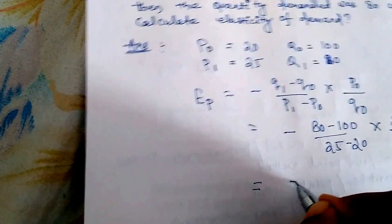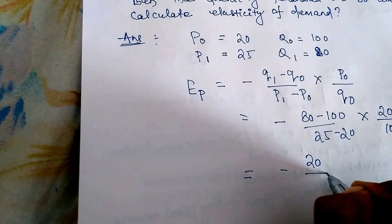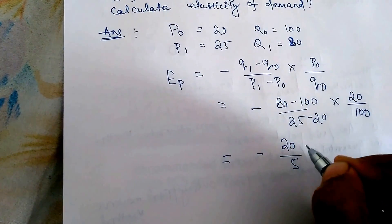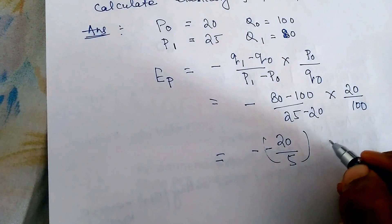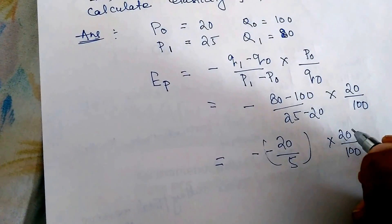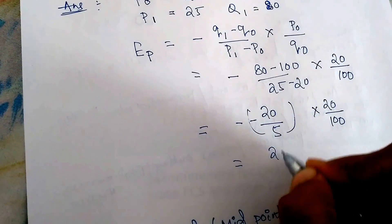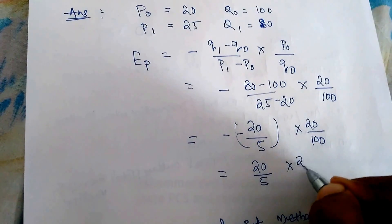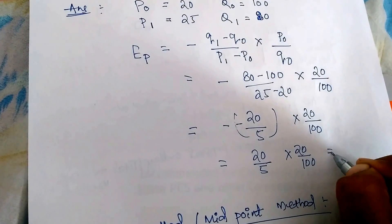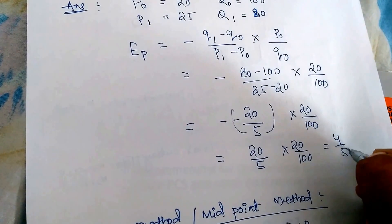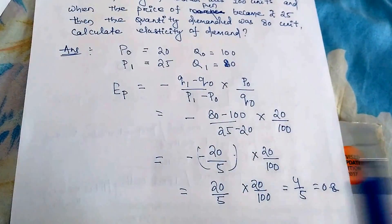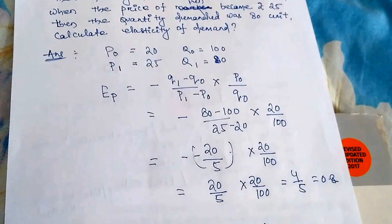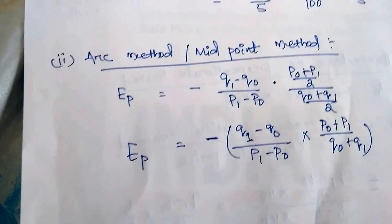Putting in the values: (−20) / 5 × (20 / 100) = (−20/5) × (20/100). The negatives cancel, giving us 20/5 × 20/100 = 4/5 = 0.8. So the price elasticity of demand is 0.8. This is how we can calculate easily using the formula with multiplication and subtraction. Now let's move to the next method: the arc method or midpoint method.